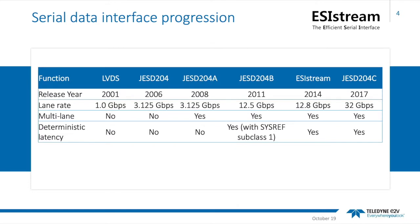This table shows nearly two decades of interface technology advancement as data rates try to keep pace with system demands. It starts on the left-hand side with first-generation serial data technology — low-voltage differential signaling, or LVDS. It then progresses into what is now four generations of JEDEC specification writing, all the way to its latest iteration, JESD204C, claiming support for up to 32 gigabits per second lane rates. EasyStream, the subject of this discussion, represents the only alternate high-speed data interface option, with even its initial iteration providing optimal serialization features, including support for multi-lane and deterministic latency.